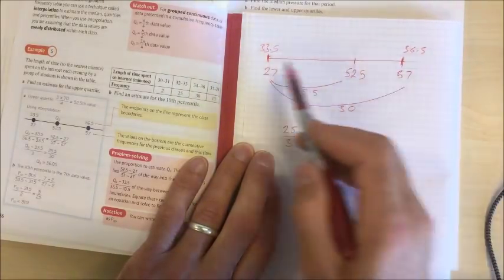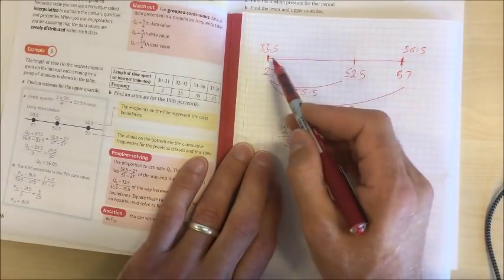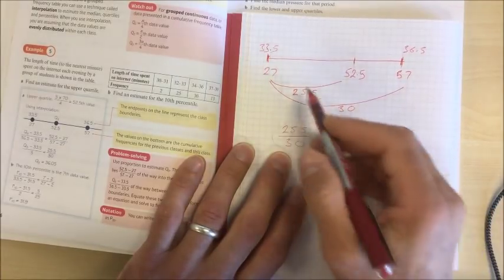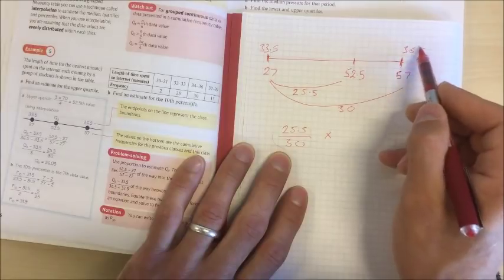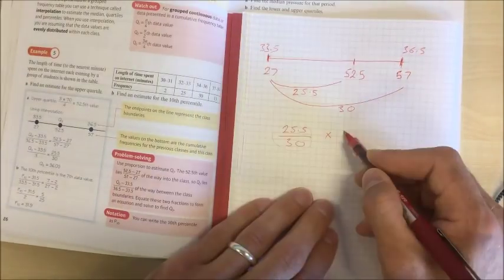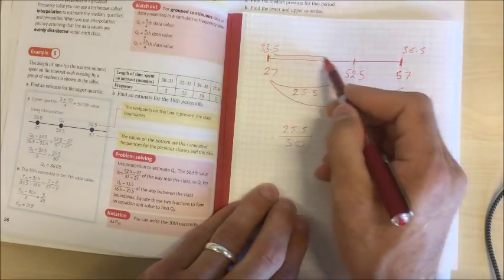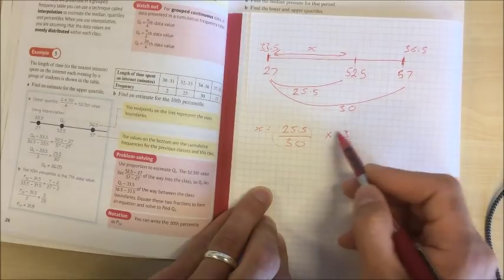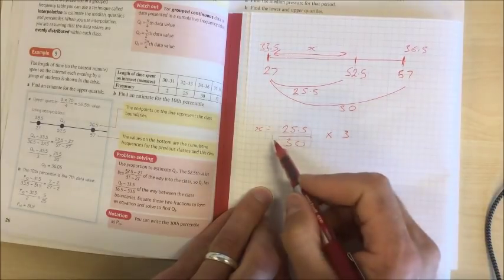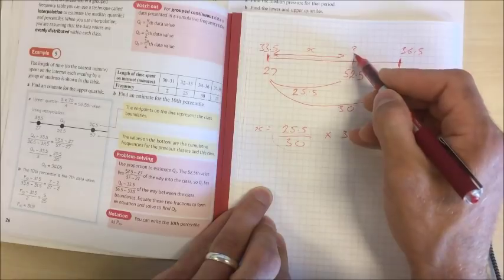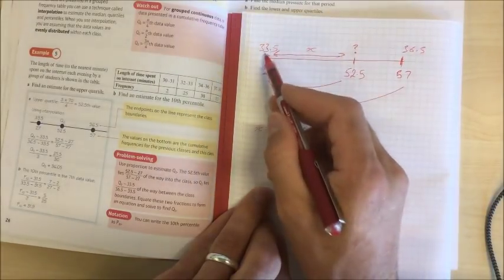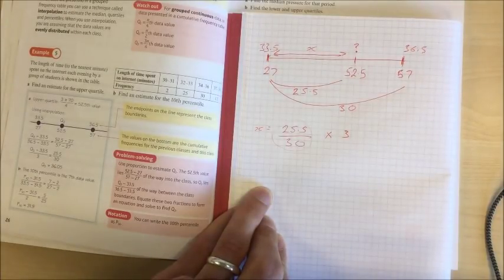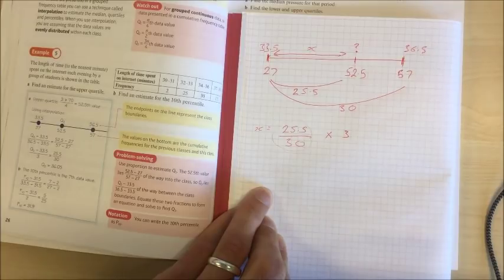We're going to go that same proportion, the same fraction, the same percentage if you like, along the top of the line. So it's that fraction of the distance from 33.5 to 36.5, three. So this distance here is that fraction of three. Now once you know that distance there you can work out where your upper quartile is because it's 33.5 plus that distance there. And that's the whole idea here with interpolation.